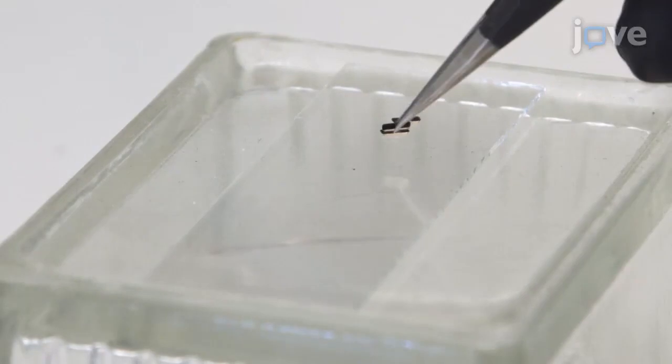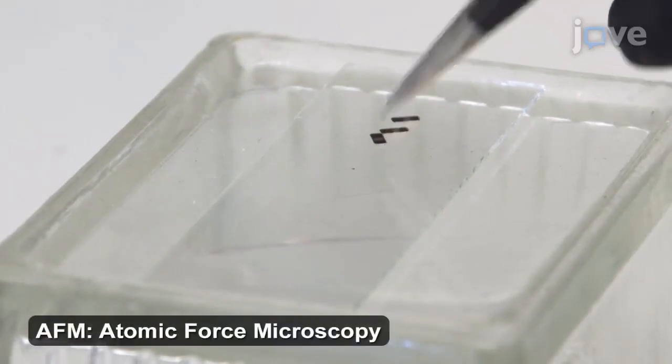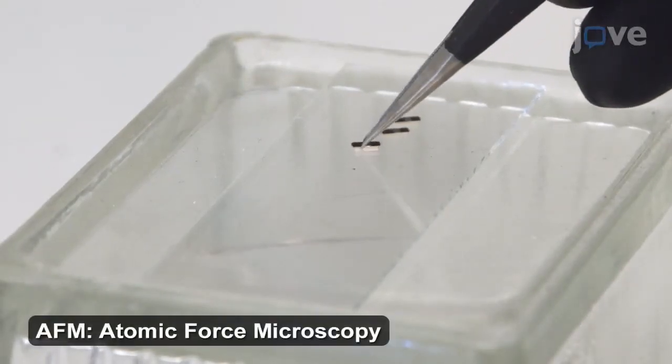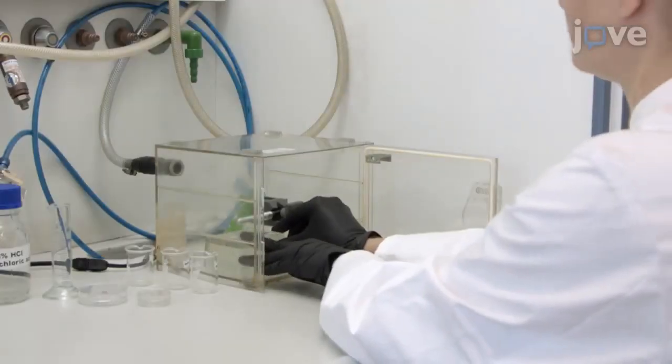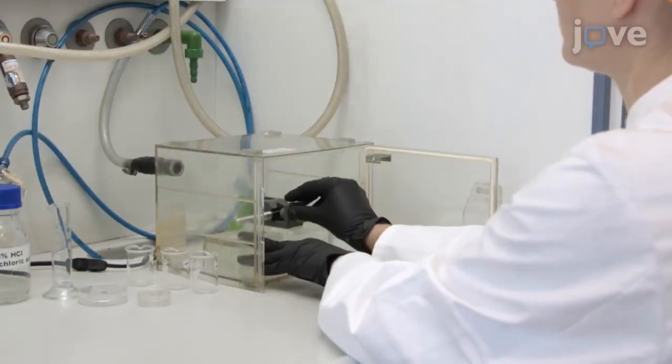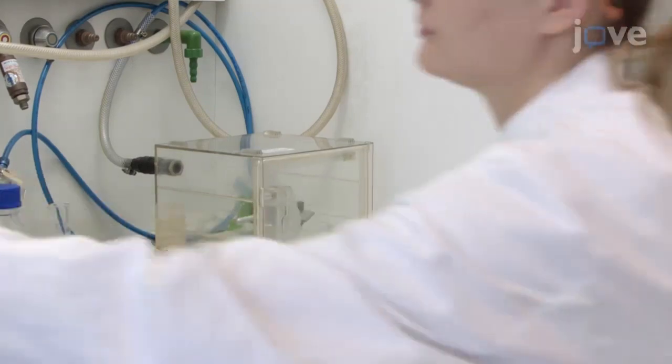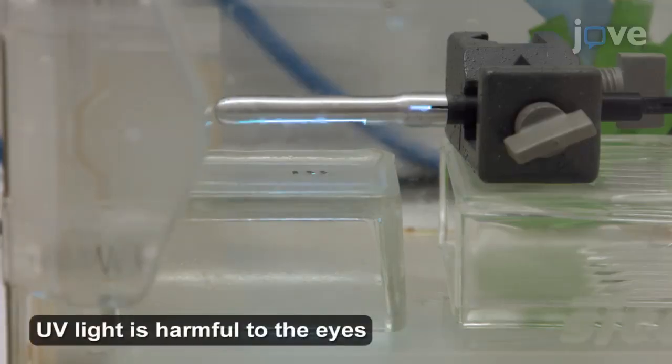Then, transfer the silicon nitride AFM cantilever probes to a clean glass slide with the tip facing upwards. Transfer the slide to a UV light impermeable chamber and irradiate the slide with ultraviolet light from above for at least 90 minutes.